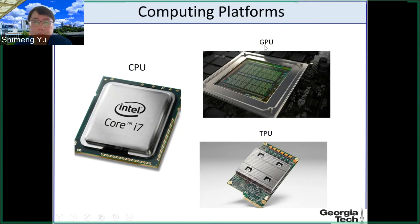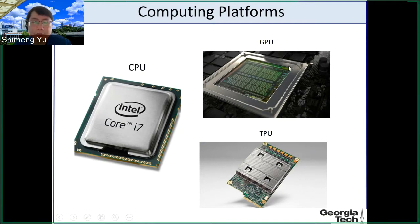For example, we see the GPU — graphic processing units. One famous vendor is NVIDIA. Originally the GPU was designed for graphic processing, especially in gaming applications. But recently the GPU is also widely used for machine learning and artificial intelligence workloads, because of the parallel computation capability it offers. So we offload some computing from the CPU to GPU, because GPU is better at parallel computation to accelerate those operations.